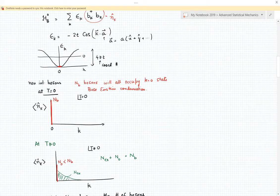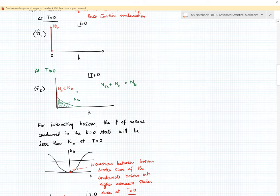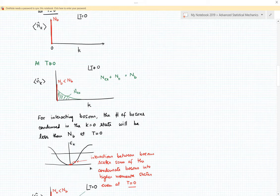If the temperature is not zero but finite, then we know that the condensate will be depleted. The number of bosons in the zero momentum state will now be less than n_b, and some bosons will be excited into higher momentum states due to thermal fluctuations. These occupancies obey the boson occupation statistics, and if you integrate all of those states you will get n_excited plus n_zero equal to the total number of bosons.